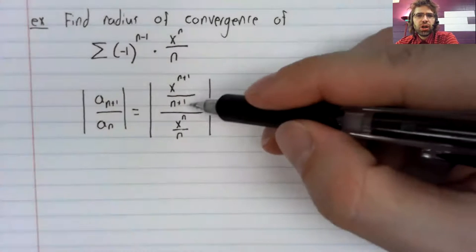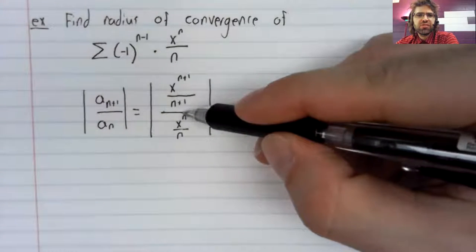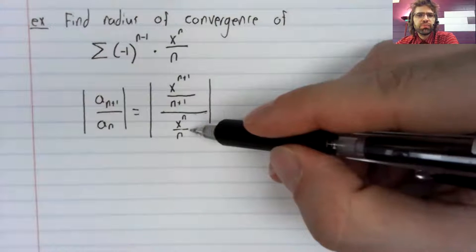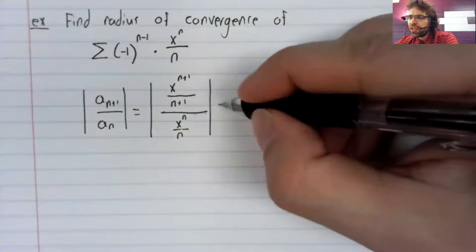Multiply top and bottom of this big fraction by the reciprocal of the denominator.